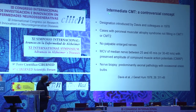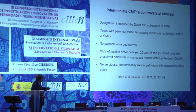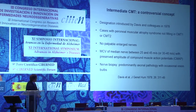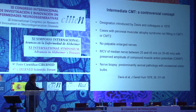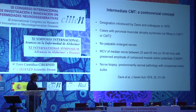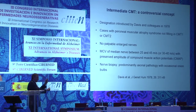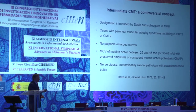Intermediate CMT has been a controversial nosological entity. There are authors denying the existence of this type of CMT. This designation was introduced by Davis and colleagues in 1974 for cases with peroneal muscular atrophy not fitting into CMT1A or CMT2. These patients had no palpable enlarged nerves. Motor conduction velocity of the median nerves ranged from 25 to 45 meters per second — in other series between 30 and 40 — with preserved CMAP amplitude. Nerve biopsy showed predominantly axonal pathology with occasional presence of onion bulbs.